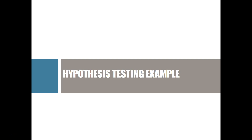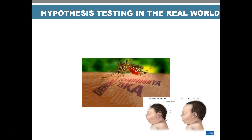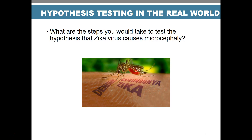Let's look at a full example of hypothesis testing using Zika virus. Zika virus has become a big concern because it might cause microcephaly — a smaller-than-average head circumference in a baby — which leads to problems with brain development and overall development of the child. We're concerned that Zika virus may lead to microcephaly, so what steps would we take to test that hypothesis?